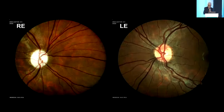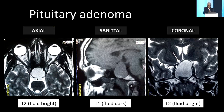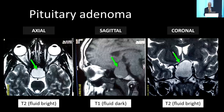Here is a patient with optic atrophy in the right eye — you can see not just temporal pallor of the left disc but also nasal pallor. This is a bow-tie optic atrophy, very typical of chiasmal lesions. This patient had a pituitary adenoma. These pictures clearly show all three views — axial, coronal, and sagittal — as well as T1 images where fluid like the vitreous is dark, and T2 images where fluid appears bright. You can see the pituitary adenoma with suprasellar extension pressing the chiasm.